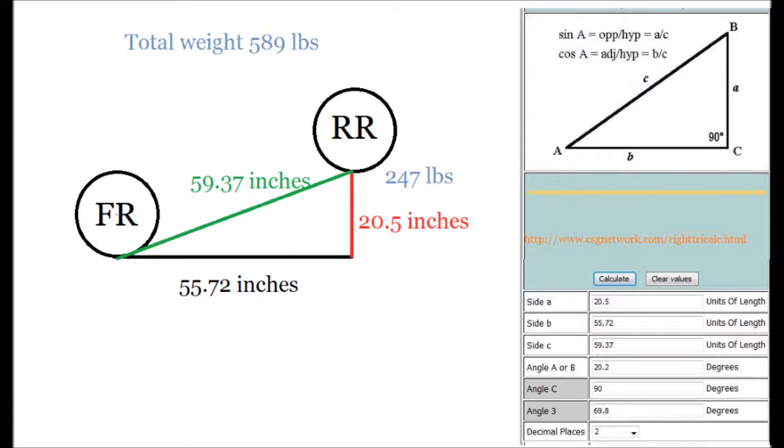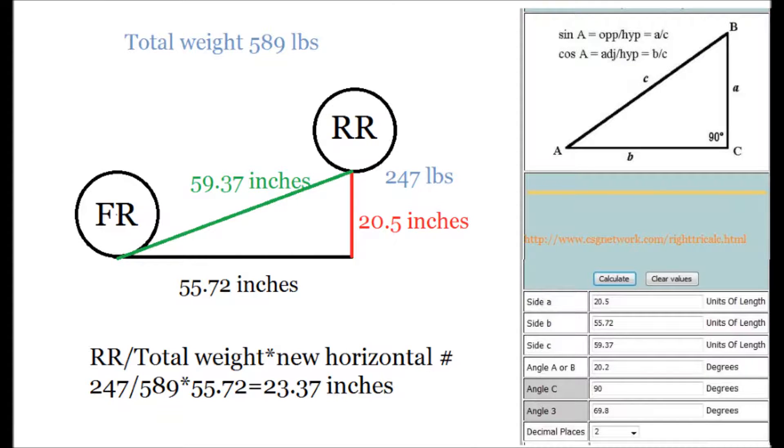Let's measure the new weight under a rear wheel. Since we raised the rear wheel still 20.5 inches, the weight went down to 247 pounds. The total weight still 589 pounds. So let's do a new calculation. We'll take a weight under a rear wheel which is 247 pounds divided by a total weight of 589 pounds and multiplied by a new wheelbase of 55.72 inches. The answer is 23.37 inches.